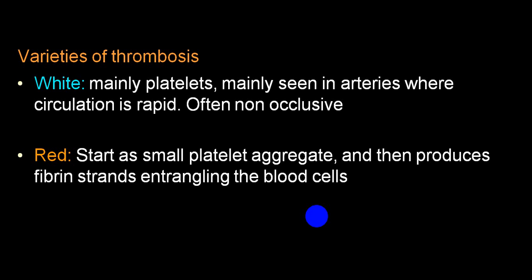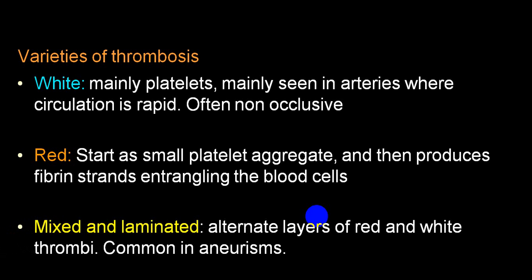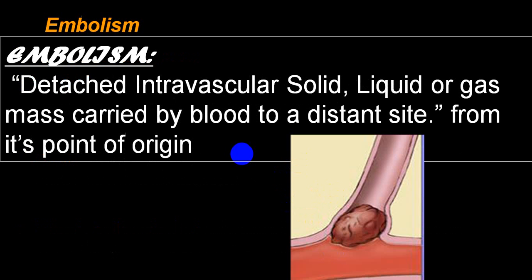White thrombus is common in arteries, mainly composed of platelets. Red thrombus is more common in veins, consisting of fibrin with many RBCs and fewer platelets. Mixed or laminated variety is commonly seen in aneurysms. When a thrombus detaches and blocks a distal vessel, we call it embolism. The detached intravascular material — solid, liquid, gas, epithelial cells, or foreign material — is carried to a distant site in the direction of blood flow.